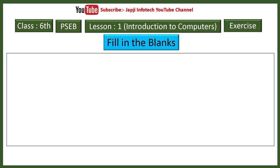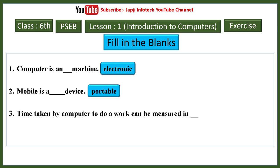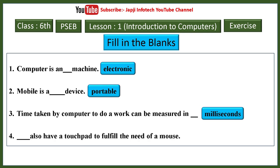Now we will learn fill in the blank for lesson number one. First: computer is an electronic machine. Second: mobile is a portable device. Third: time taken by computer to do a work can be measured in milliseconds. Fourth: laptop also has a touch pad to fulfill the need of a mouse.